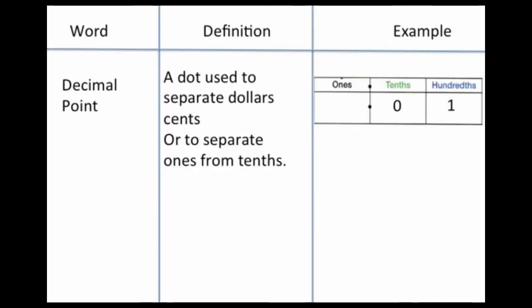The next word is decimal point. A decimal point is a dot that we use to separate dollars and cents, or we use it to separate ones from tenths. If you look in the example, you can see the decimal point right there between the ones and the tenths. The tenths and the hundredths are to the right of the decimal point. Whole numbers are to the left of the decimal point.